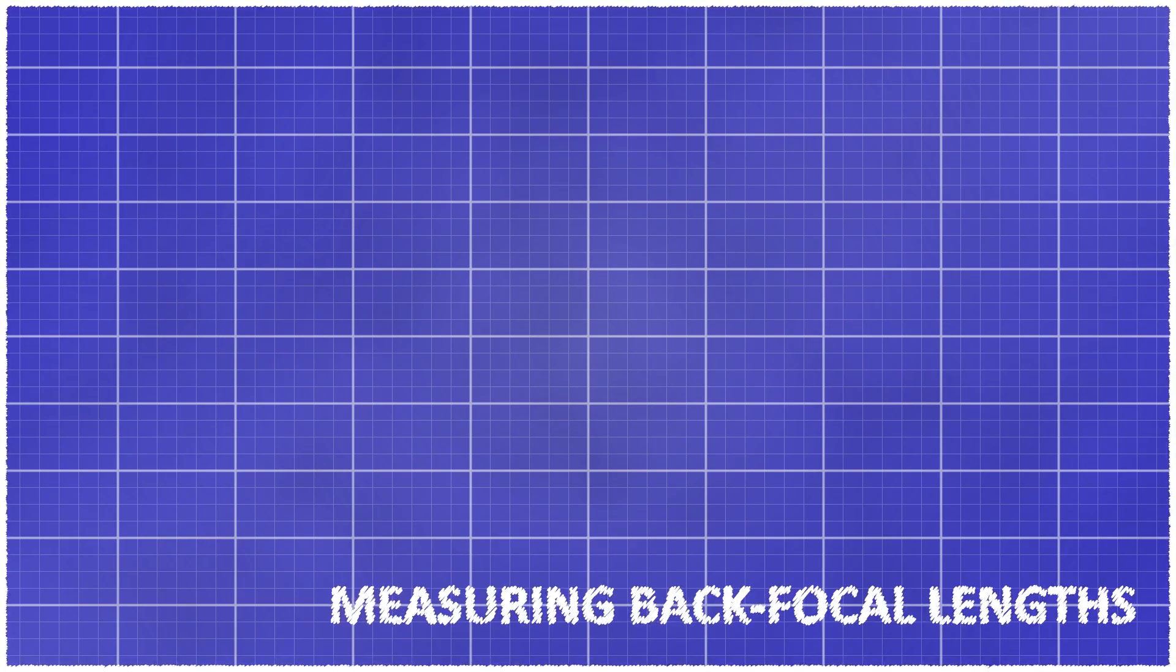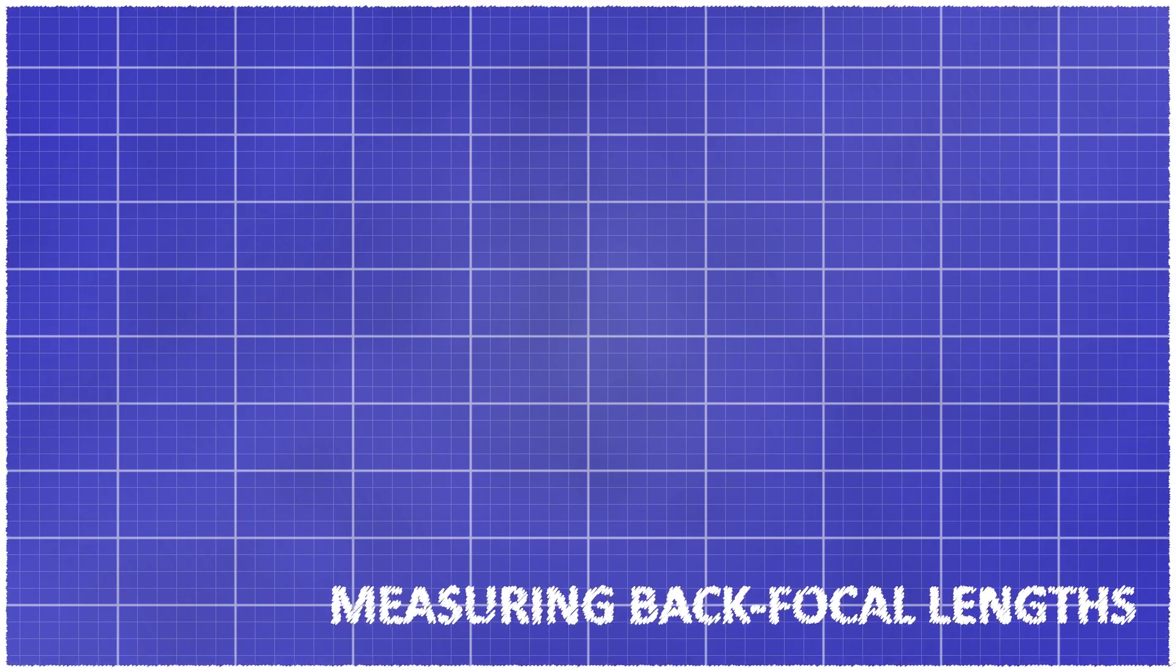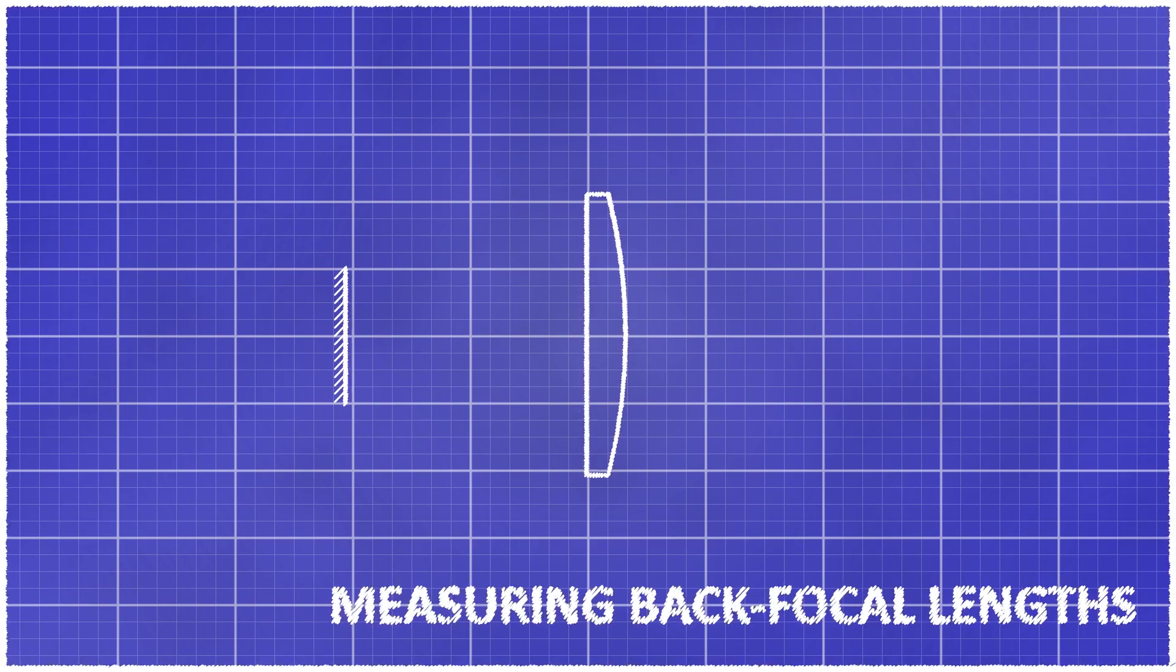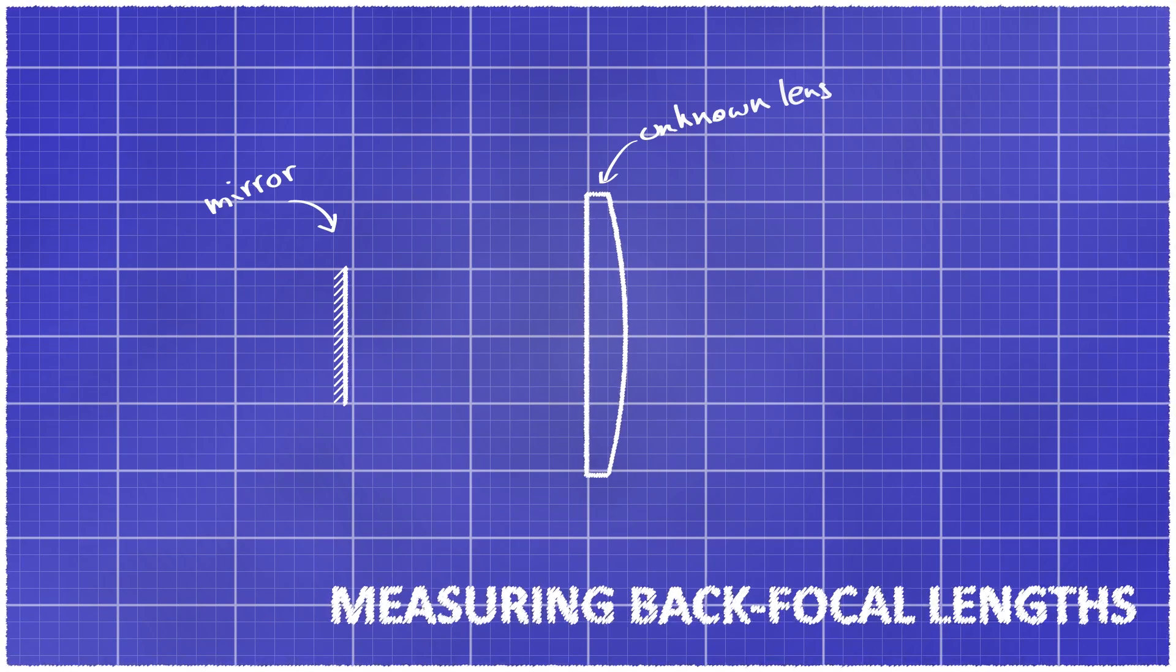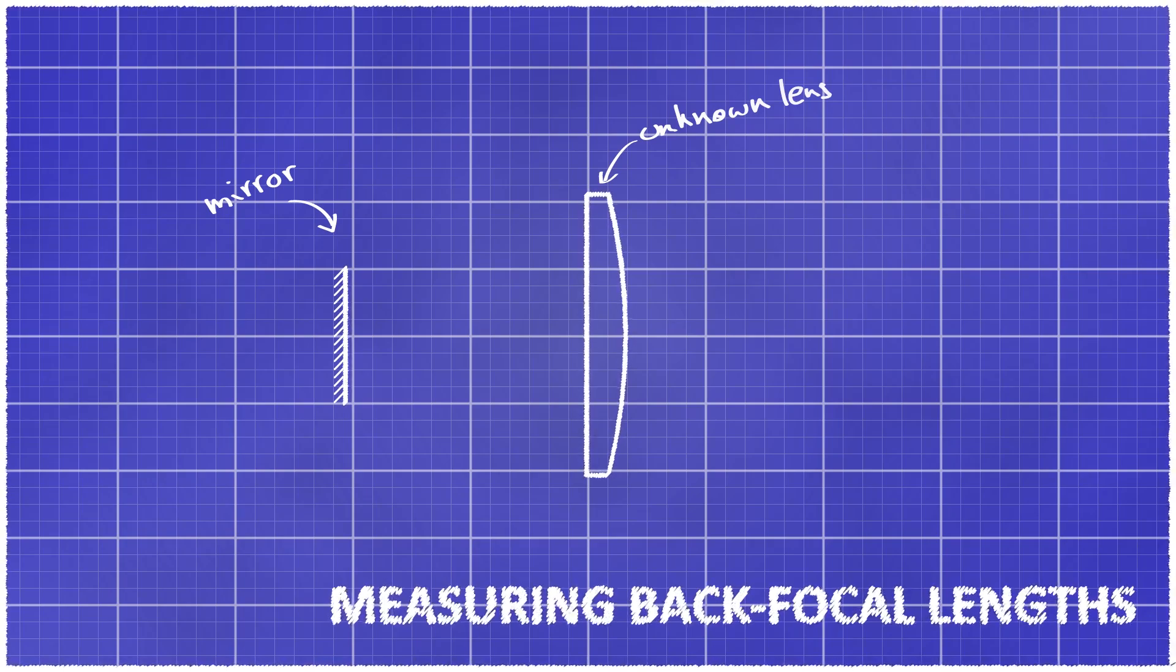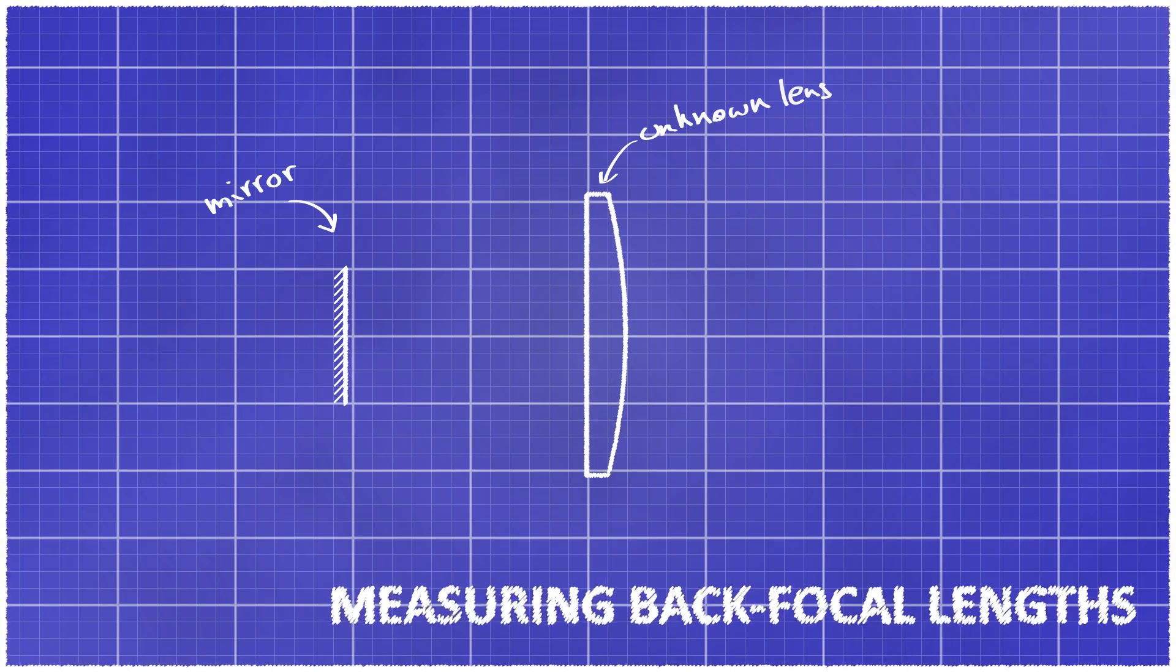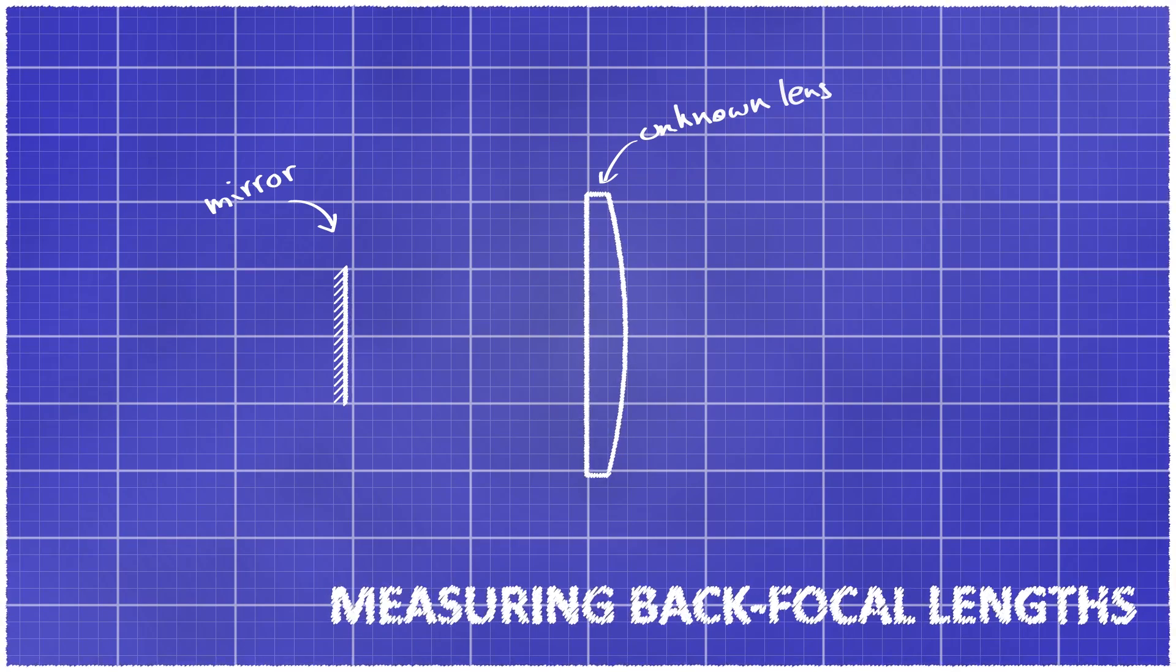A second application is to use auto-collimator to measure focal length. All you have to do is place a mirror behind your lens. Once your mirror is at the exact back focal length position, you will have a cat's eye retro-reflector configuration and the image of the reticle projected by the auto-collimator will be re-imaged sharply on the camera.